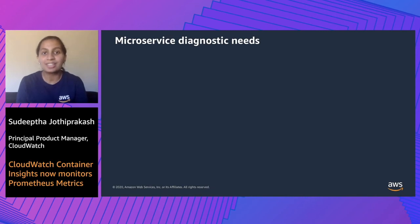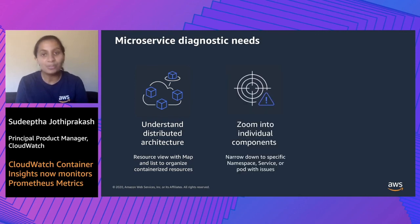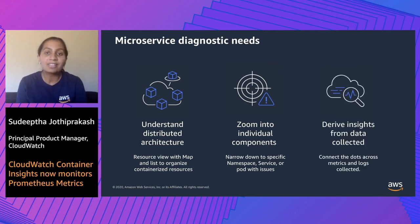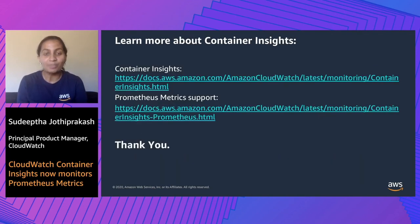In summary, we spoke about a few tools that help with the diagnostic needs of microservice-based environments. First, to understand distributed architectures, you can use the Container Insights resource view with map and list modes to organize all of your containerized resources. Next, to zoom into individual components, you can use the automatic dashboards available on Container Insights to narrow down to specific namespaces, services, and pods to isolate health and performance issues. Finally, to derive insights from the data aggregated, you can connect the dots between metrics and logs collected from across your application — whether on Service Lens, Container Insights, or CloudWatch Logs Insights. You can learn more about the updates and support for Prometheus in the documentation link below. Thank you for joining us today and learning more about Container Insights.